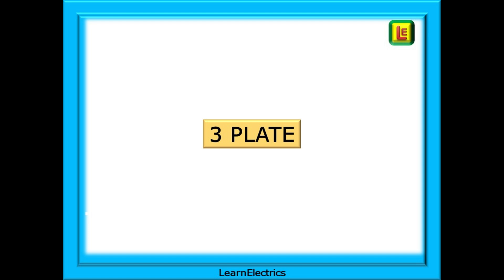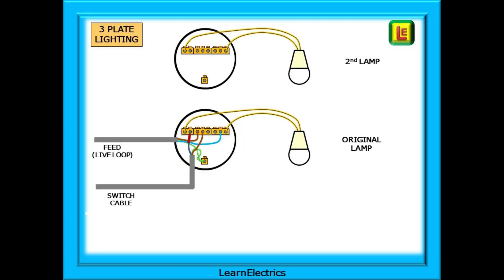The three-plate system is almost identical except there are more wires already installed in the first ceiling rose. As before we have the original and the newly positioned ceiling rose for the second lamp. This time there are already two twin earth cables entering the first ceiling rose: the switch cable and the feed cable from the consumer unit.